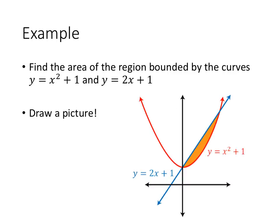So the way that we're going to figure all that stuff out is by drawing a picture. We're going to sketch the curve y equals x squared plus 1 and sketch the curve y equals 2x plus 1, and we get a picture that looks a little something like this.